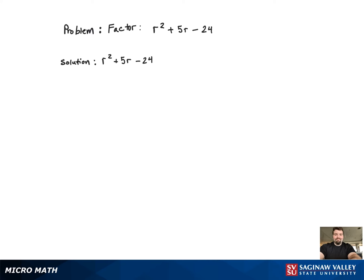For this problem, we notice that there's no coefficient in front of the r squared term. So that's going to mean that we can factor it into two binomials that both begin with an r. So we can assume that.